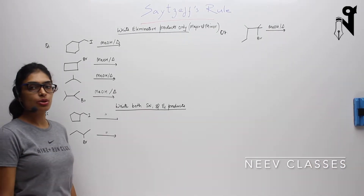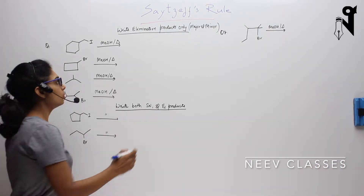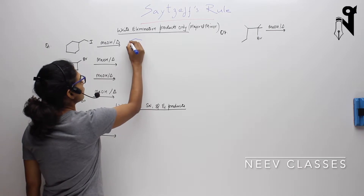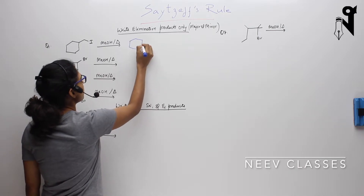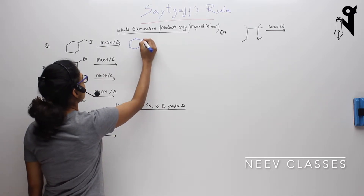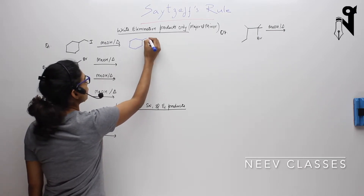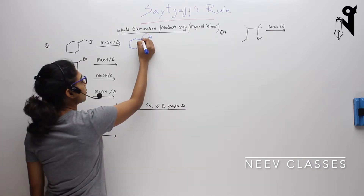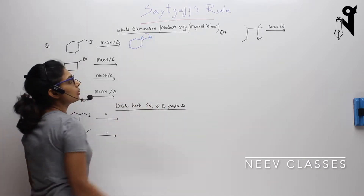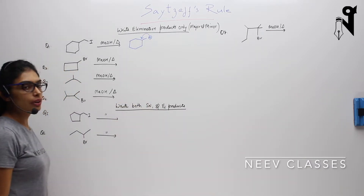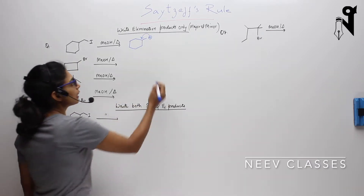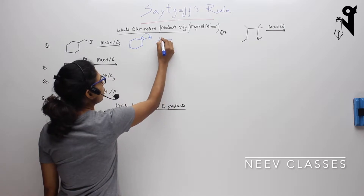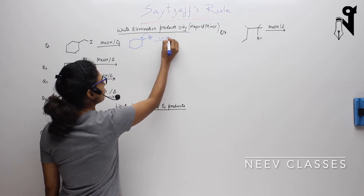Let's discuss the solution of these questions now. So this will form the carbocation like this — there will be a shift over here: a hydrogen shift, a hydride shift, a 1,2-hydride shift.